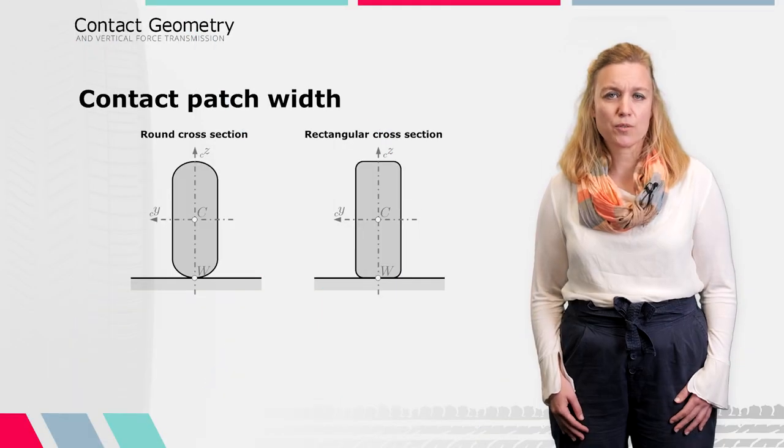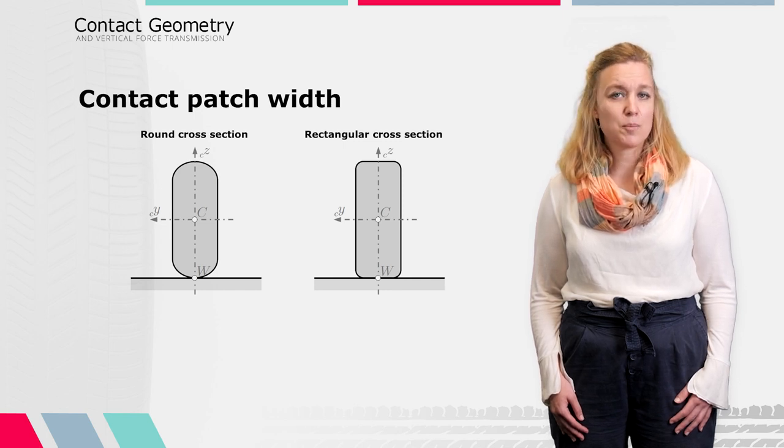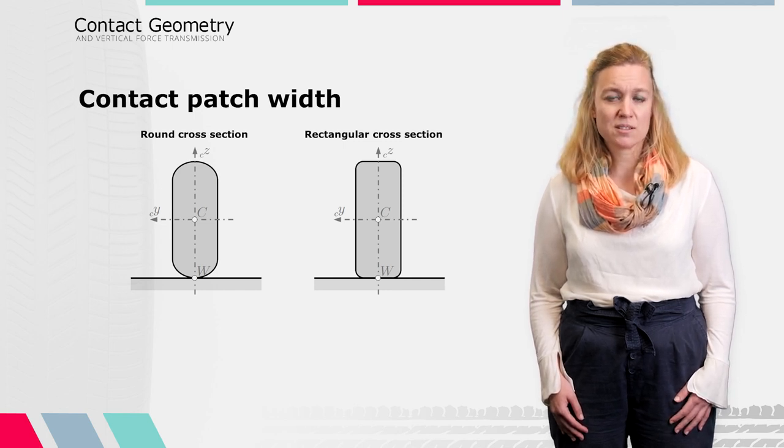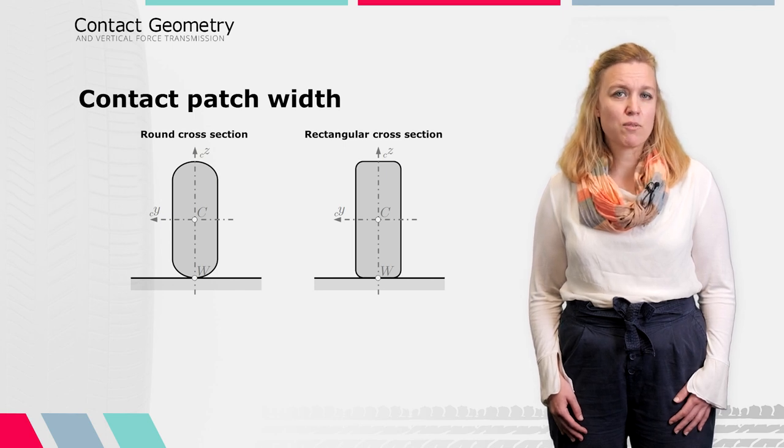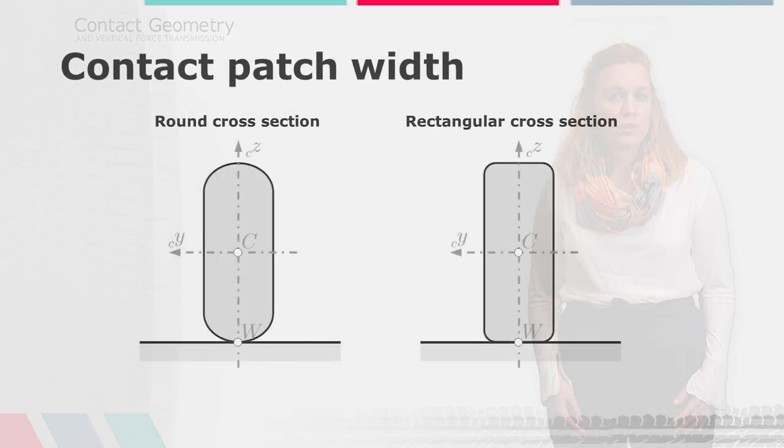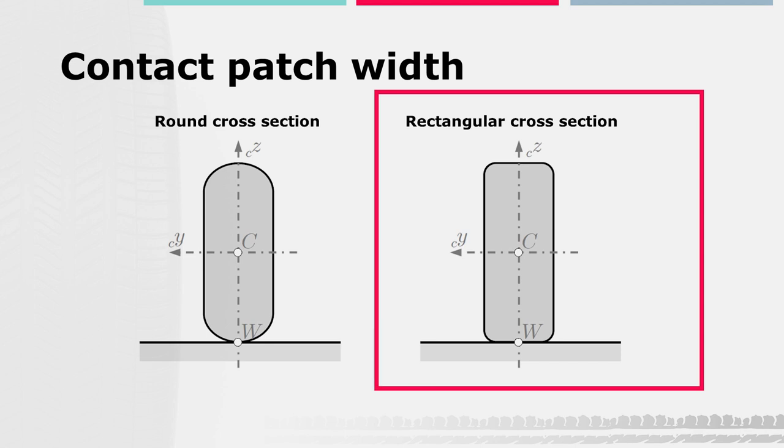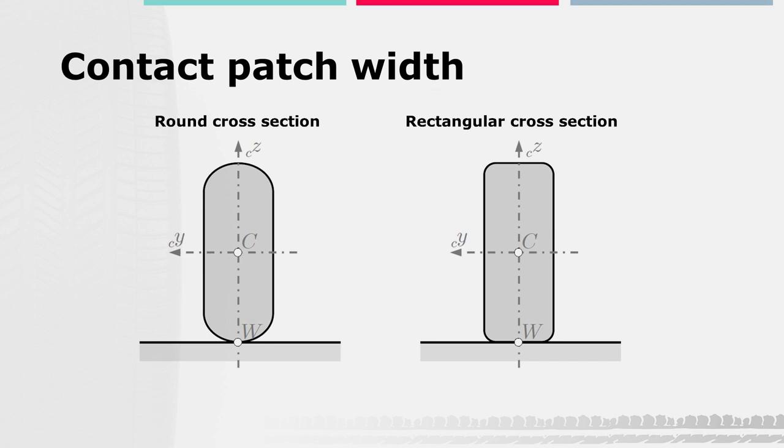A description of the width of the contact patch is more complex than for the length. Apart from additional influences such as camber angle, the roundness of the tire structure plays an important role. The cross section of a tire is somewhere between a rectangle and a circle. To highlight this, we show you two extreme examples. On the right side, there is a tire with an almost rectangular shape, as often seen for passenger cars or truck tires.